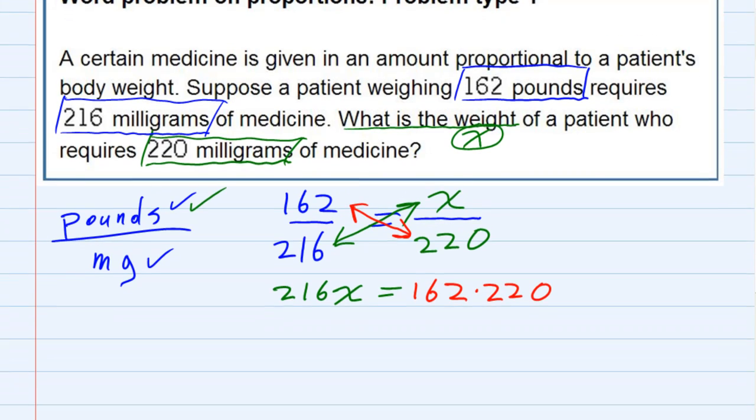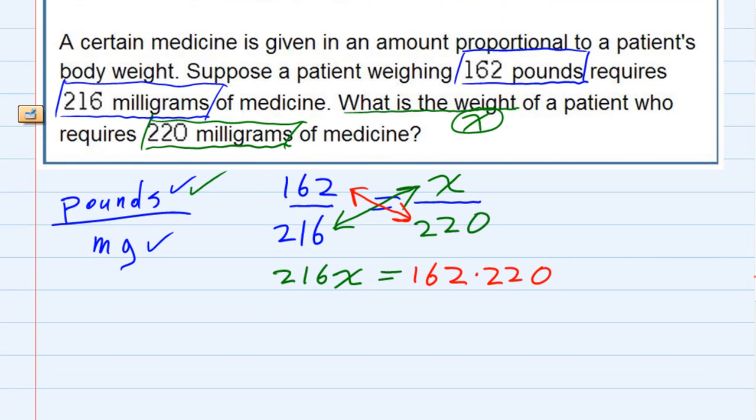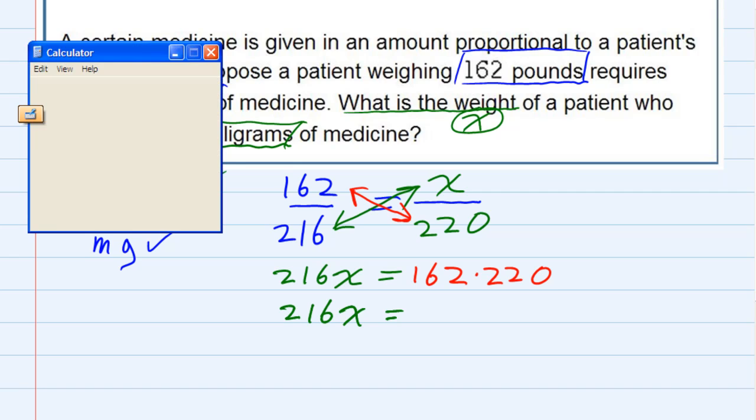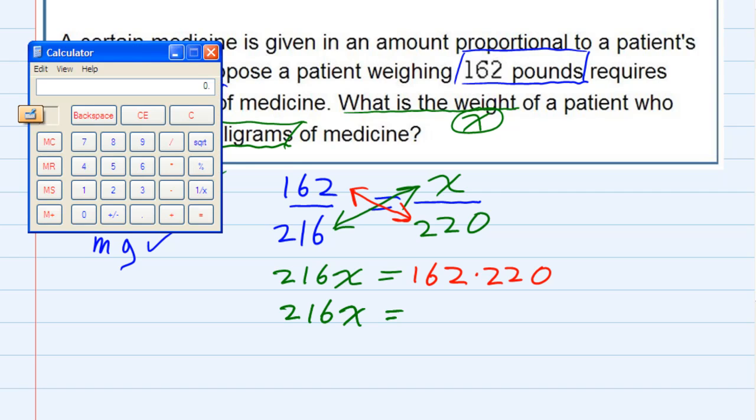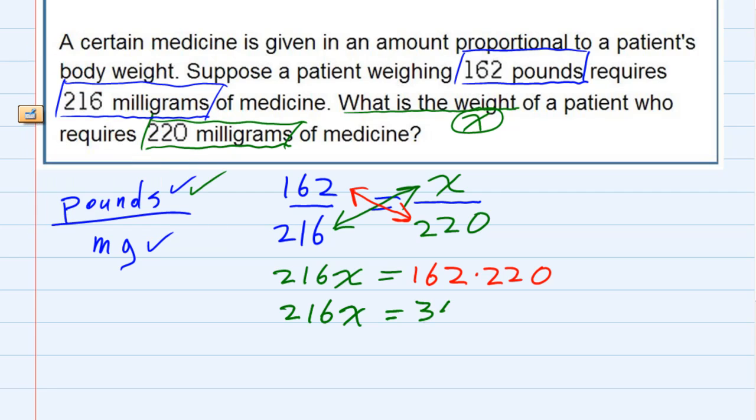Now we just need to solve this for X. The first thing I'm going to do is actually do that multiplication on the right-hand side. So 216X equals, we need to figure out what that is. I'm going to use our calculator. 162 times 220 equals 35640.